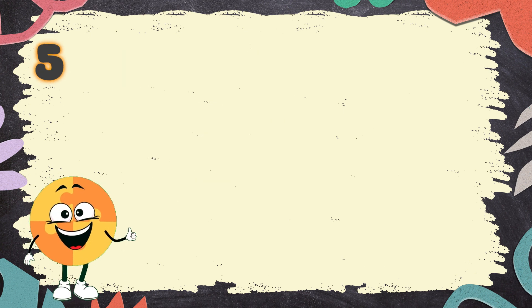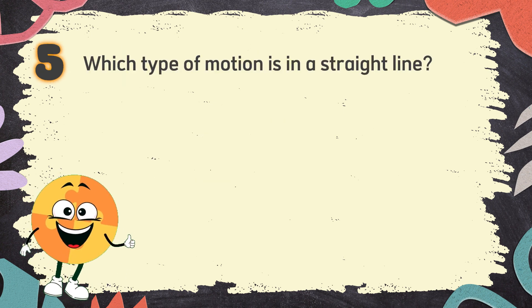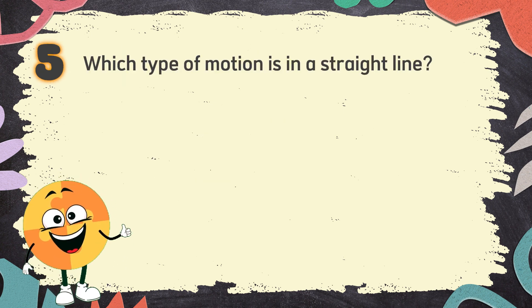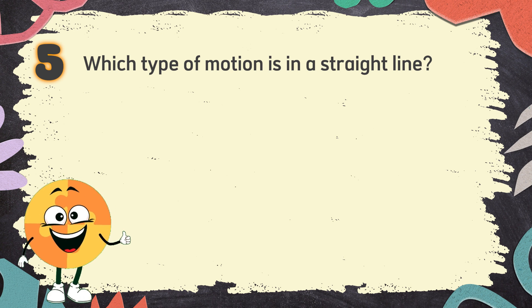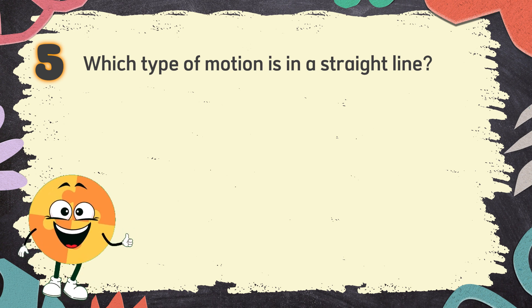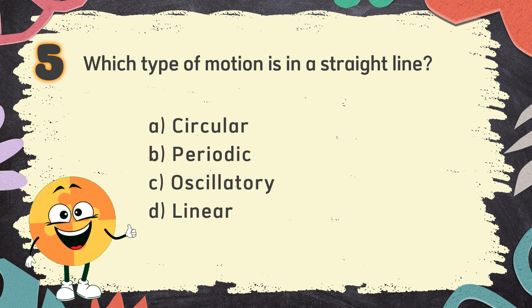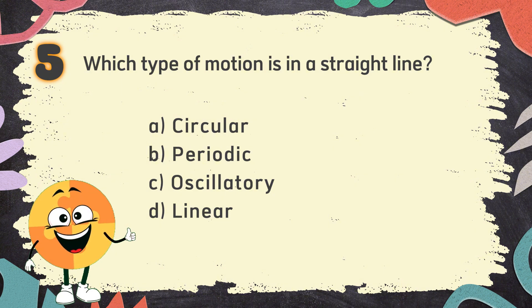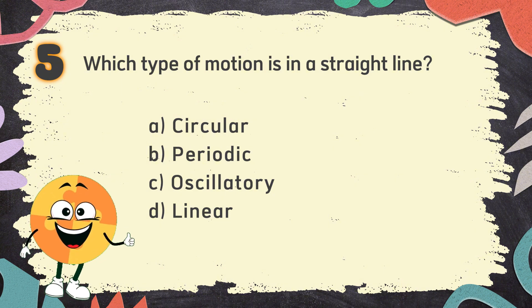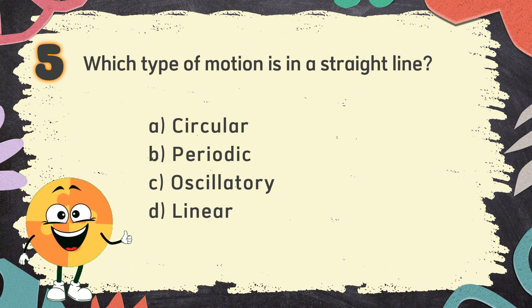Number 5. Which type of motion is in a straight line? The choices are: A. Circular, B. Periodic, C. Oscillatory, D. Linear.